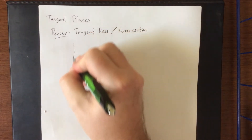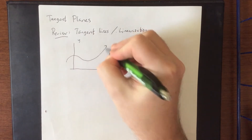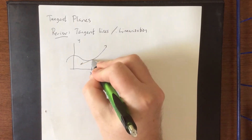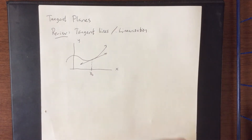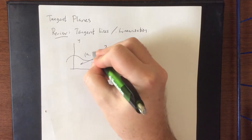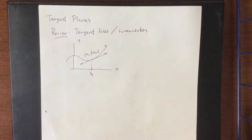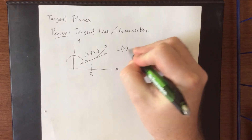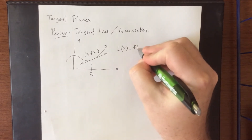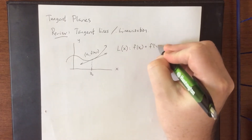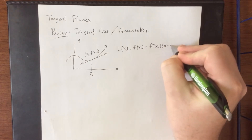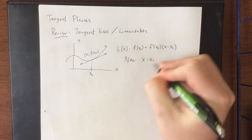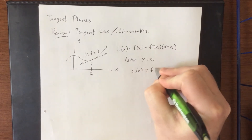Back in Calc 1 you could have a curve in the xy plane, and a value that we'll refer to as x naught, and a tangent line at this point. Because we don't necessarily know what the y value is, we'll just call it f of x naught. We have what was known as the linearization of the function at this point, which was essentially the equation of the tangent line — the function value plus the slope of the tangent line times x minus whatever that x coordinate was. The idea is that near x equals x naught, the linearization of your function is approximately equal to the function itself.